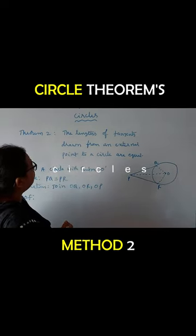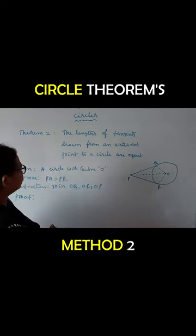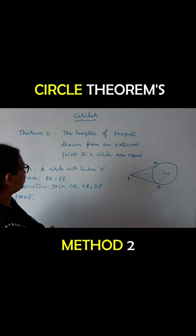Theorem 2: The lengths of tangents drawn from an external point to a circle are equal. Given a circle with centre O, to prove PQ is equal to PR.